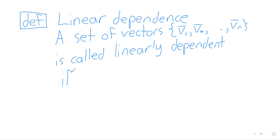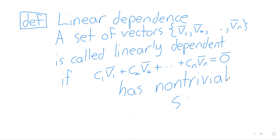if the homogeneous vector equation C1V1 plus C2V2 plus up to CnVn equals the zero vector has non-trivial solutions.